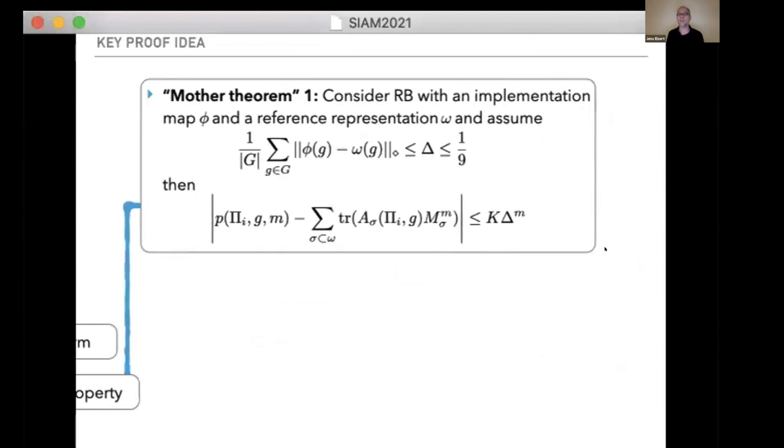Here's the mother theorem one. A good way of closeness is the average diamond-norm distance of the real to the reference implementation. If this is small enough, then one can guarantee for any implementation map that the randomized benchmarking data are indeed close to a linear combination of exponentials, with an error that's exponentially small in this distance.